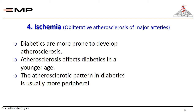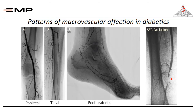We have already mentioned neuropathy and the resultant deformity, and more susceptibility to infection. The fourth component is ischemia. The fourth component of the answer is concomitant major ischemia that develops in some diabetic patients. Diabetics are more prone to develop atherosclerosis, which affects them at a younger age. The atherosclerotic pattern in diabetics is usually more peripheral, typically affecting the popliteal and the tibial arteries.